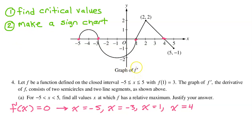Since they gave us the graph of f prime, we can easily make the sign chart right on this graph. At negative 5, the graph begins, so to the left of negative 5, we don't really know what was happening — I'm just going to put a question mark there. But after negative 5, the graph is above the x-axis, so it goes from question mark to positive. Looking at the critical value of negative 3: to the left of negative 3, f prime is above the x-axis, and to the right of negative 3 it becomes negative. So we go from positive to negative at x equals negative 3.